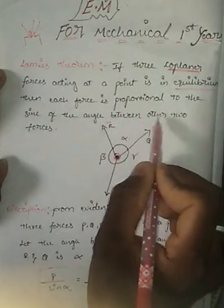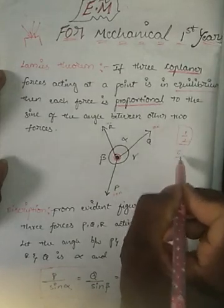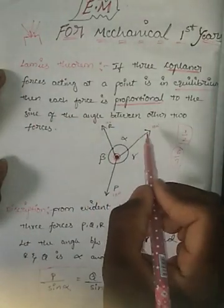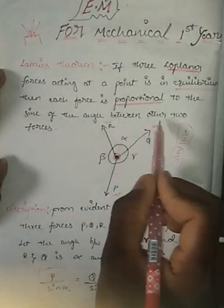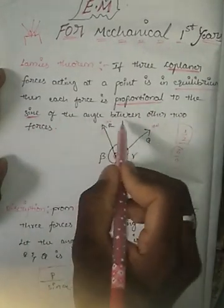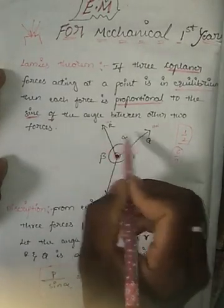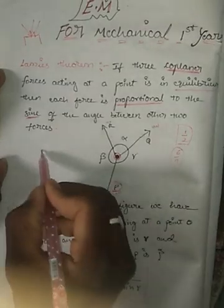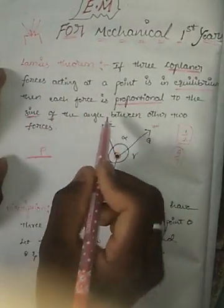Each force is proportional to the sine of the angle between the other two forces. Proportional means, for example, one by two — if one is proportional to two, then we write it as a ratio. So each force divided by the sine of the angle between the other two forces. For force P, we write P divided by sine of the angle between the other two forces.